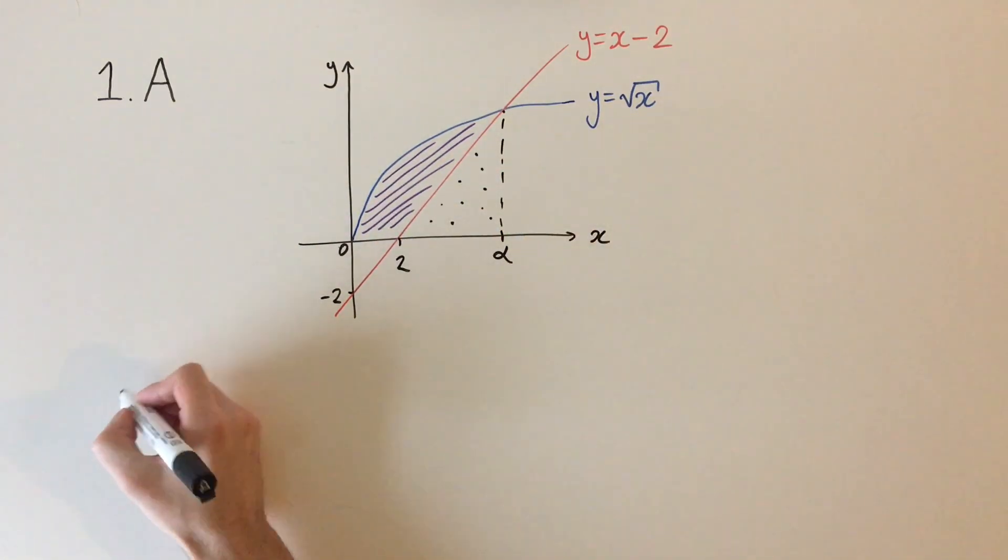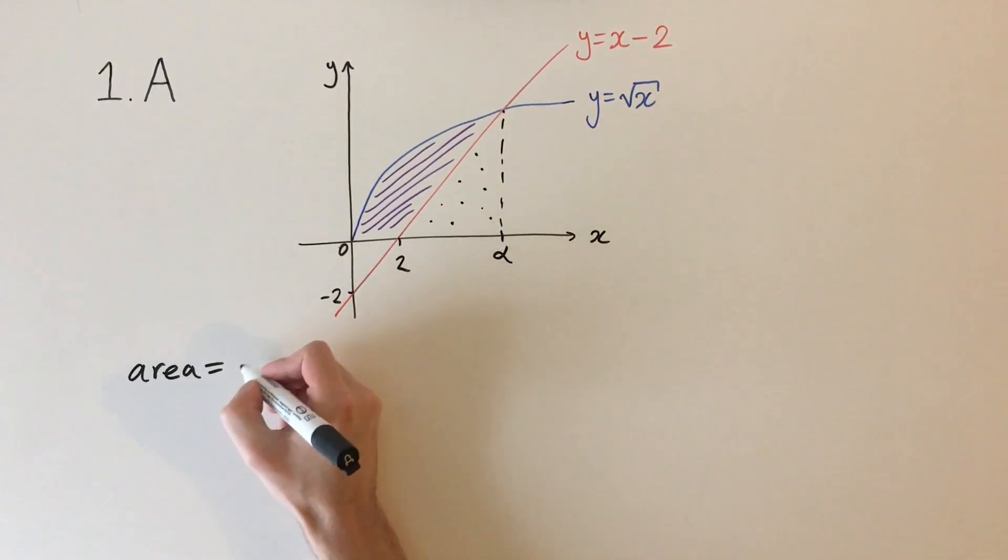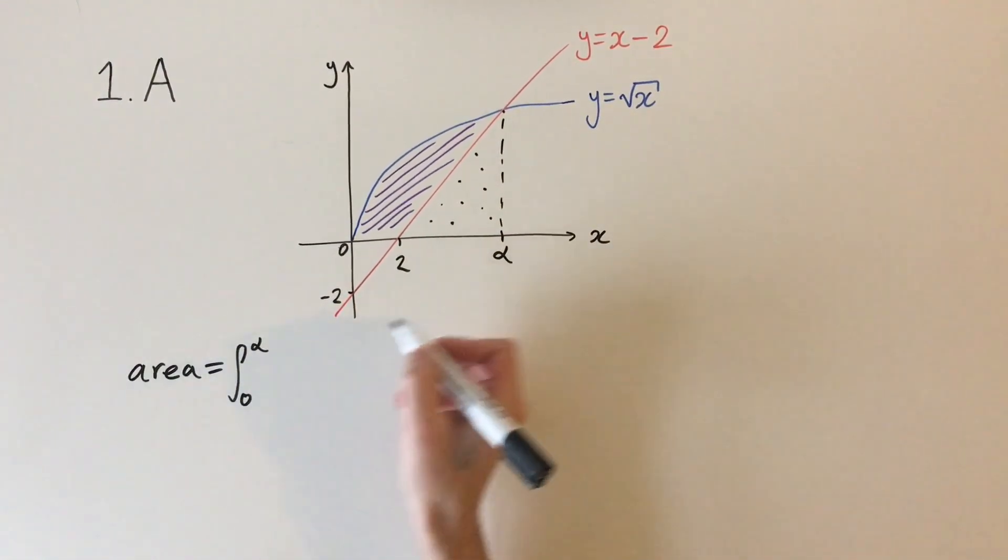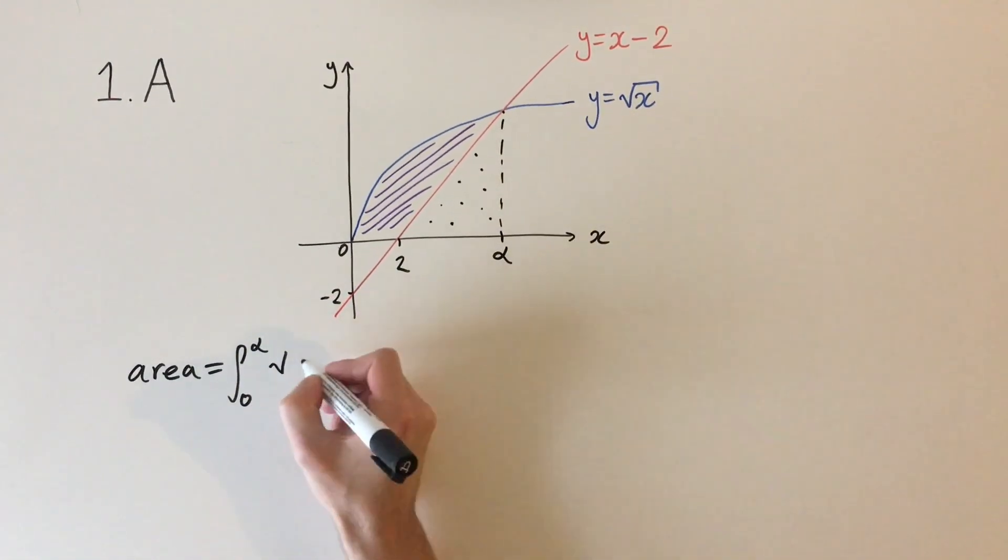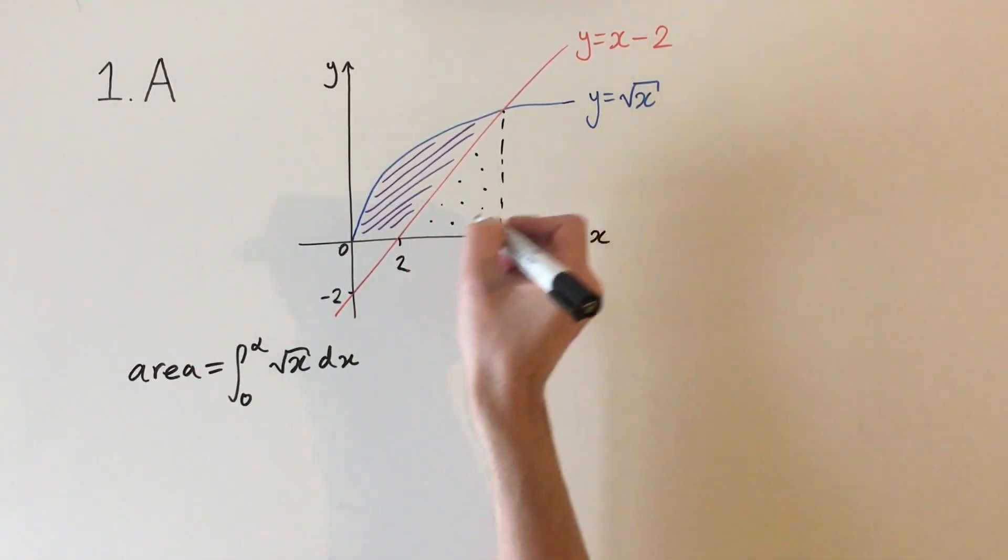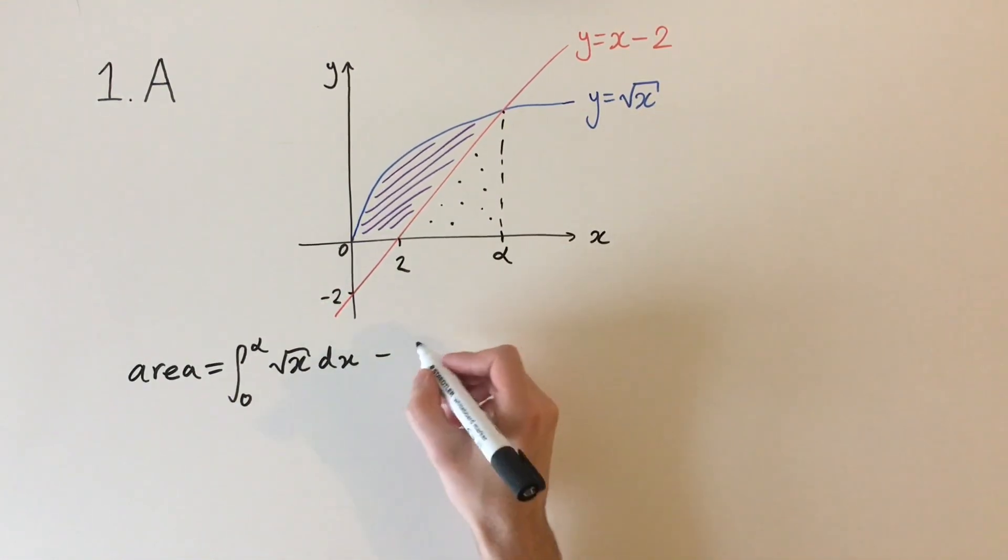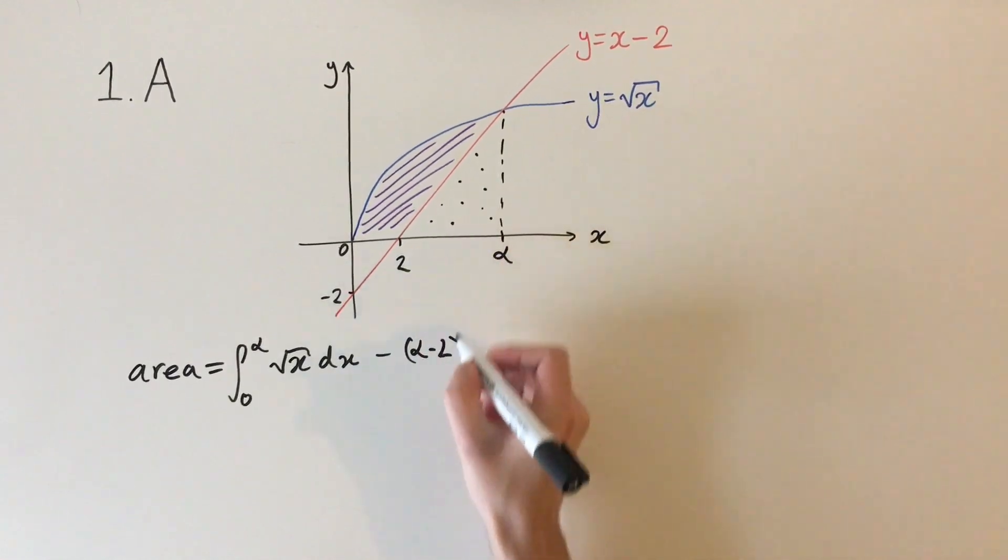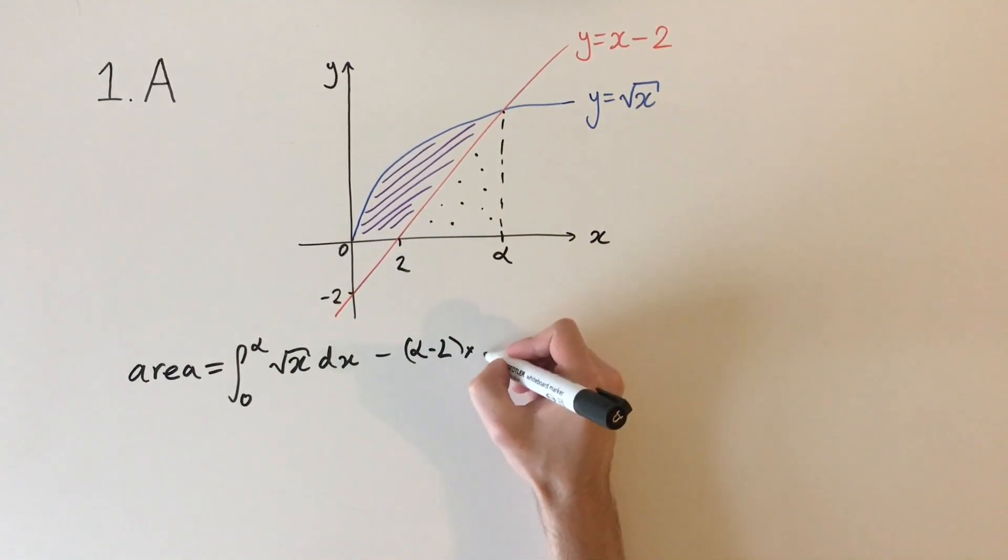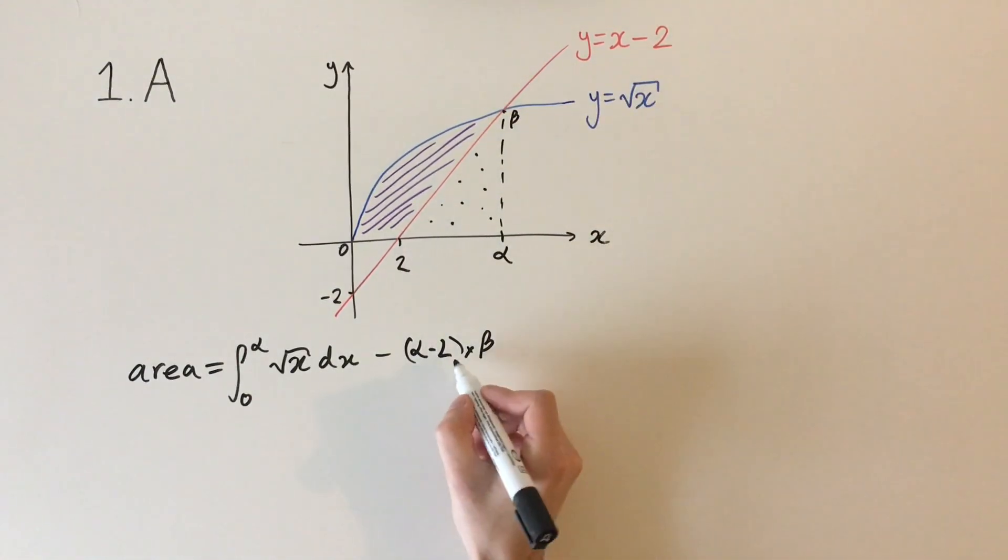Let me write that mathematically. The area can be written as the integral between 0 and alpha of square root of x dx, and then we subtract off the area of the triangle, which is base times height divided by 2. So alpha minus 2, which is the base, times the height, which we'll call beta—that's this point here, we'll find that in a bit—divided by 2.